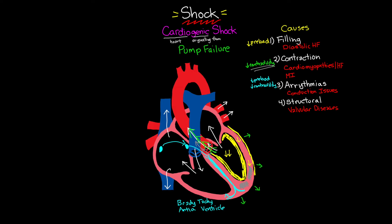Looking at the cardiac output equation, bradycardia issues will impact heart rate and ultimately cardiac output. There are lots of different processes that can contribute to this malfunctioning of our heart. For structural causes, the main thing we're looking at is valvular diseases — most importantly regurgitation, where an incompetent valve does not close all the way, resulting in backflow of blood. This takes away from blood being ejected forward, ultimately reducing cardiac output and decreasing preload.